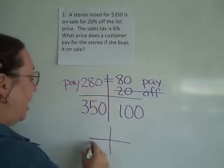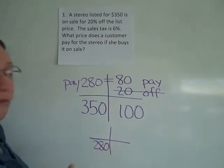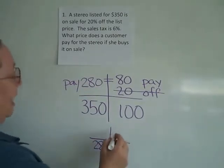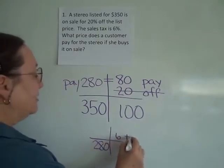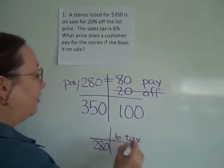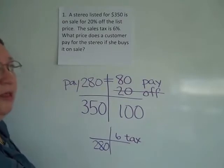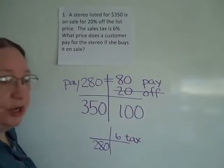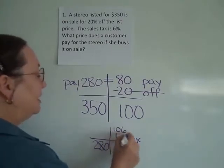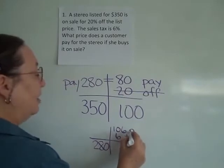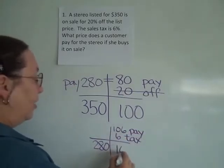The $280 becomes the total for the customer, and I have a 6% tax. Remember, tax is added on to the whole thing. The whole thing is your 100%, so my other piece is 106% that I will pay.